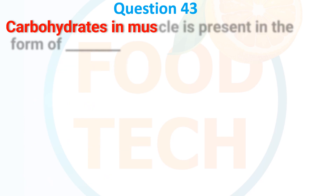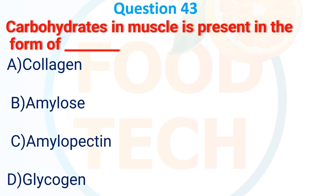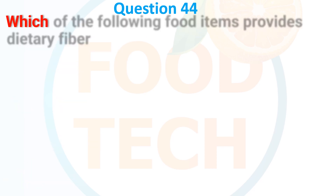Question 42: Carbohydrate in muscle is present in the form of — A. Glycogen, B. Amylose, C. Amylopectin, D. Glycogen. The answer is D. Glycogen.